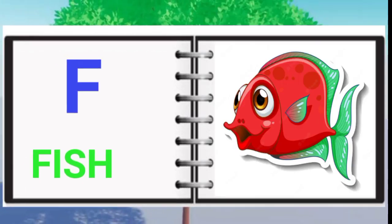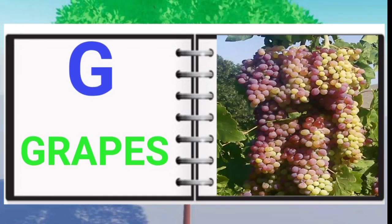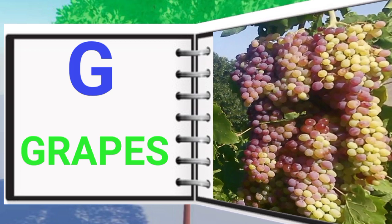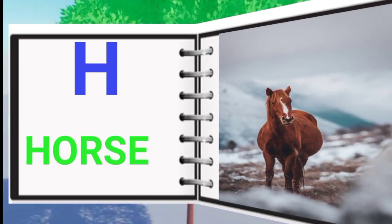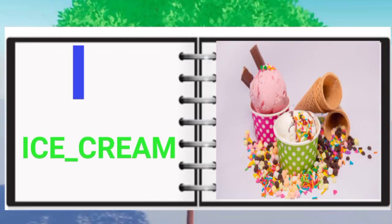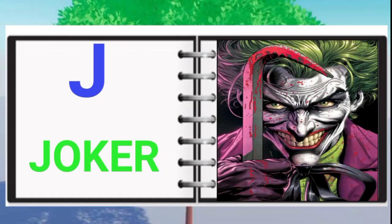F for fish, G for cat, H for horse, I for ice cream, J for goat.